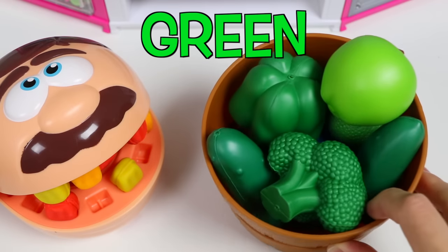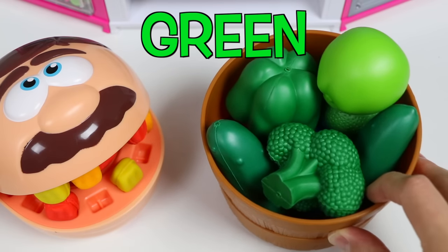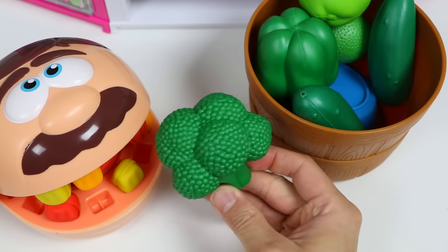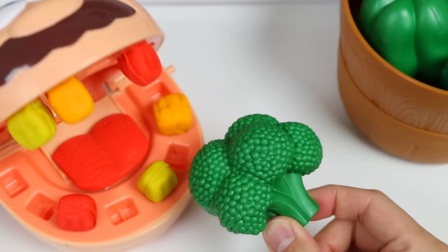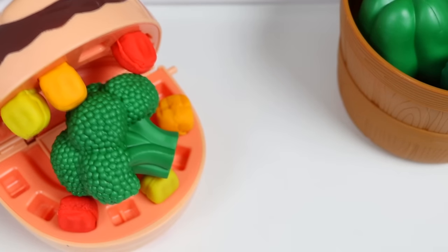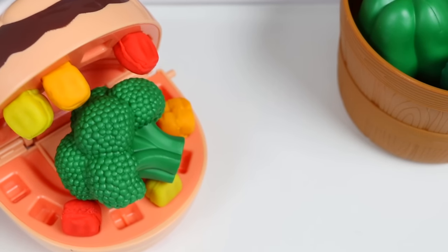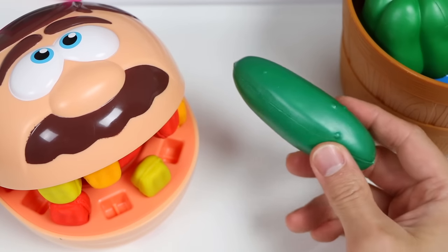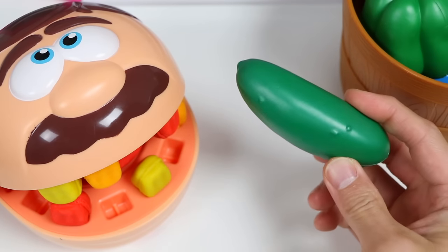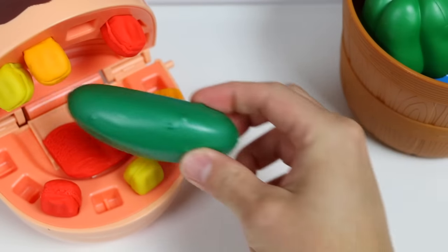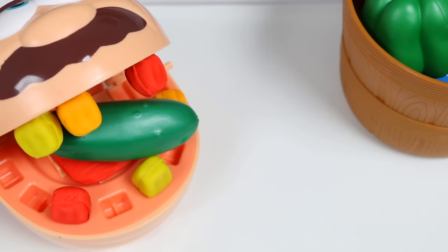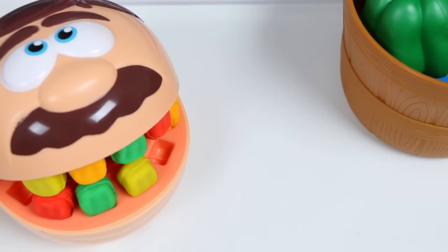Okay, Mr. Play-Doh Head. This basket is filled with green fruits and veggies. Here. Try this green broccoli. It'll be nice and crunchy, but it might have a bitter taste. And I know it's really hot these days, so try this green cucumber. It'll quench your thirst.